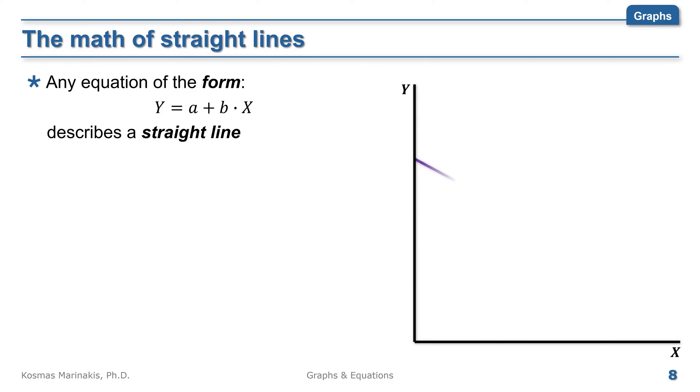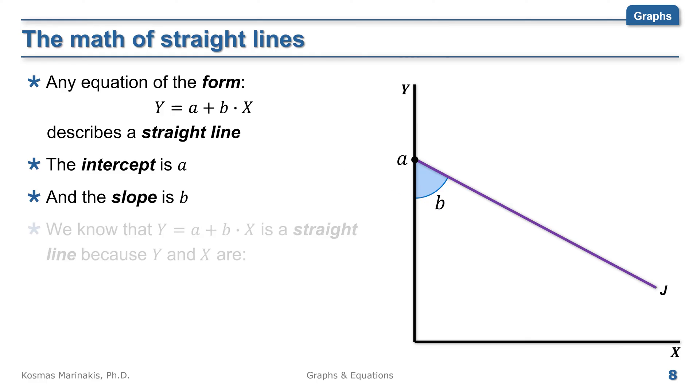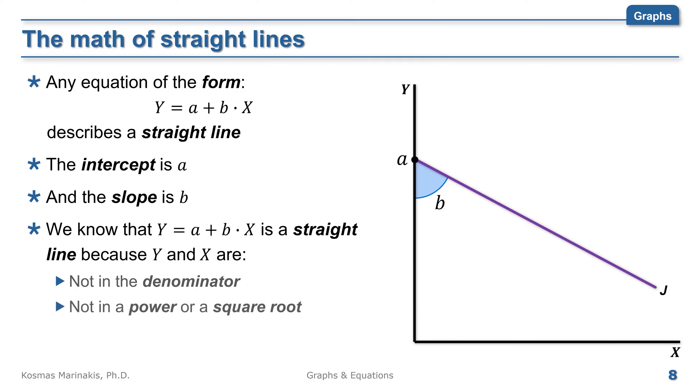Any equation of the form y equals a plus b times x describes mathematically a straight line, like the one in this figure. Here, the intercept is a and the slope is b. We know that this equation describes a straight line and not a curve because y and x are not in the denominator, not in a power or within a square root.